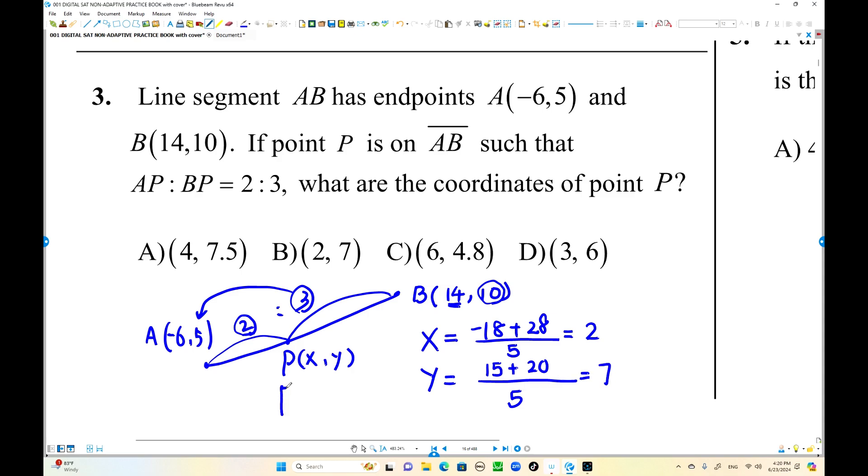So this x coordinate is 2, y coordinate is 7. So 2 and 7 is the answer. Choice B is the answer. All right, memorize the formula. Thank you. I hope you understand this one. I'll see you next time. Thank you so much.